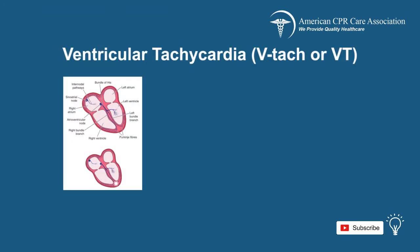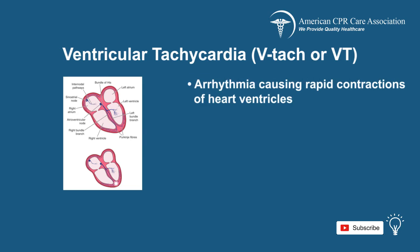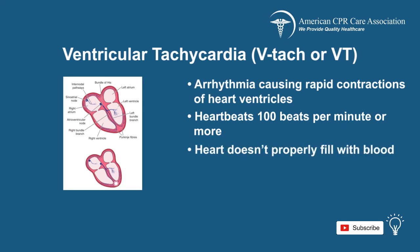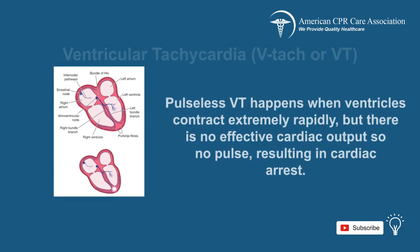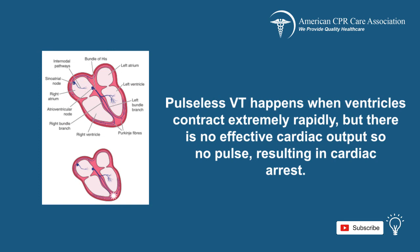Ventricular tachycardia is another arrhythmia causing rapid contractions of the ventricles in the heart, with the heart beating usually 100 beats per minute or more. The heart does not properly fill with blood. VT can lead to VF and cause sudden death. A pulseless VT happens when the ventricles contract extremely rapidly, but there is no effective cardiac output and therefore no pulse, resulting in cardiac arrest.